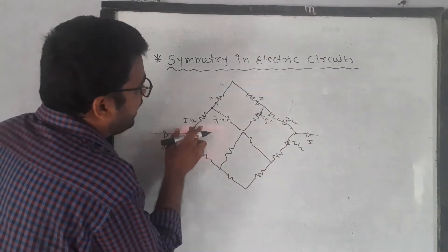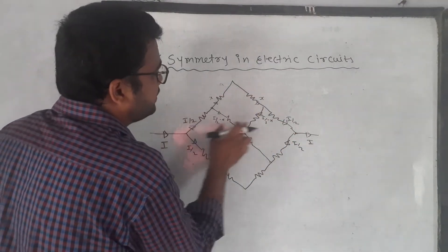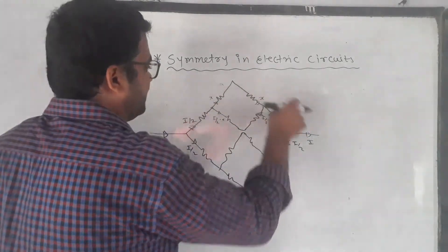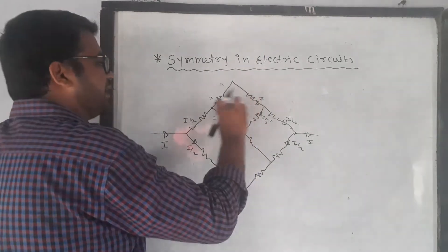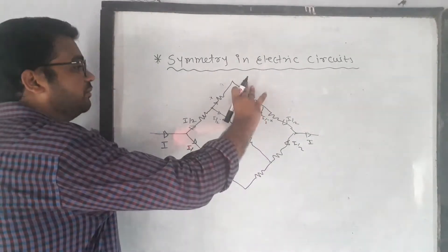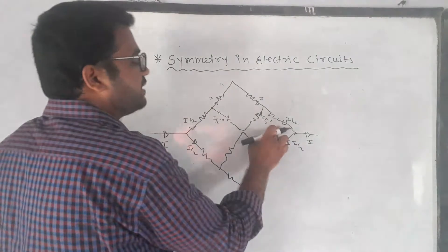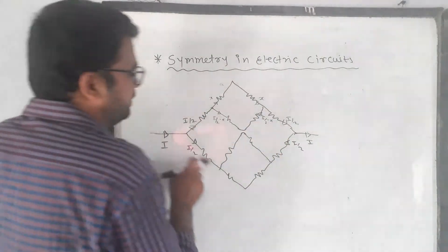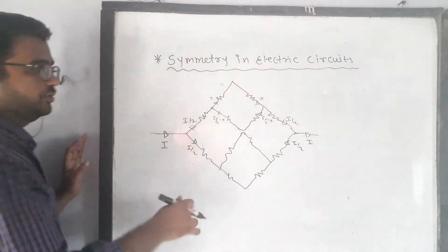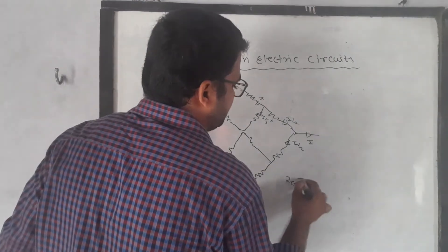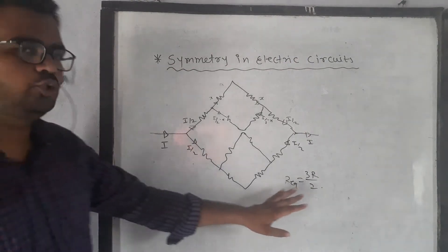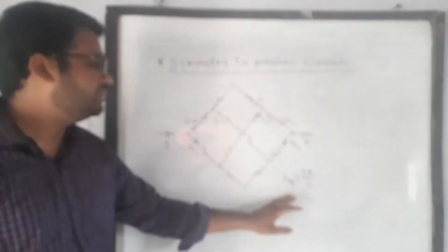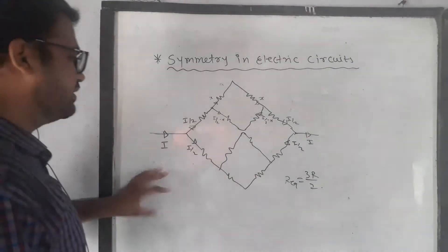After detaching the node, the circuit simplifies to resistors all in series: R, R, R give 2R on each half, and these halves are in parallel giving R. Then R + R + R = 3R for each path, and the two paths are in parallel, so the equivalent resistance is 3R/2.